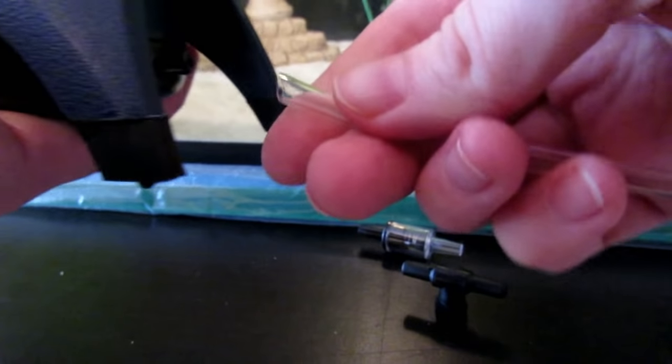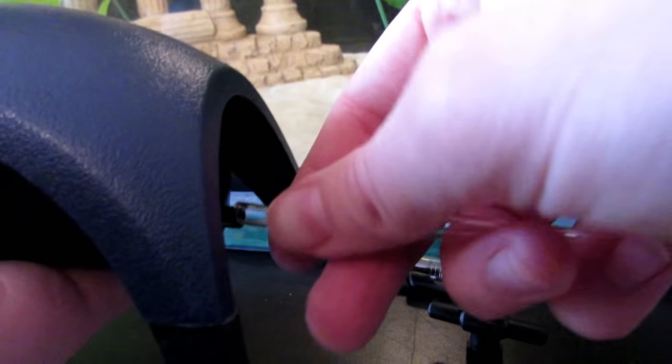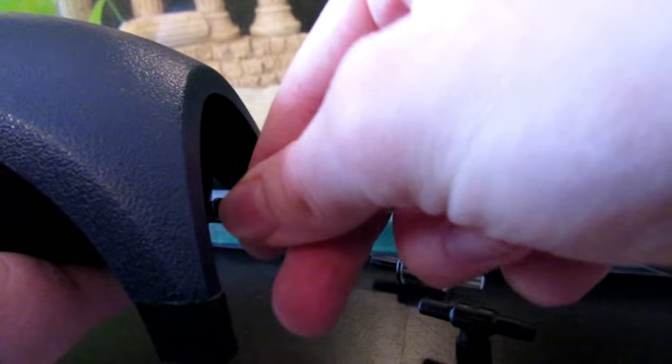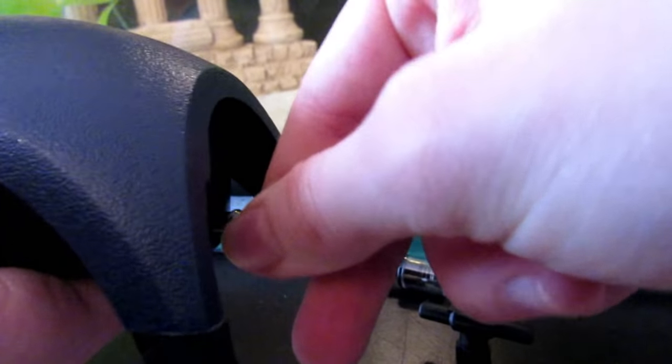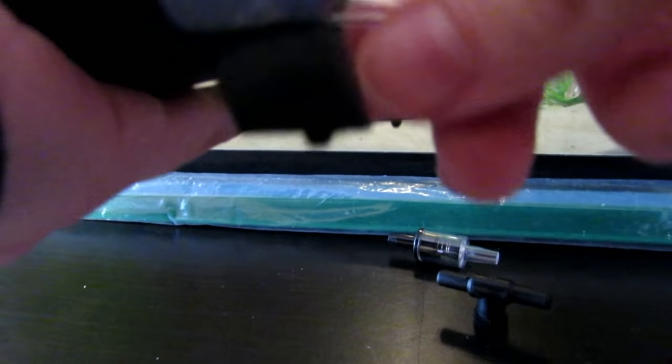Once you're done with that, you're going to take one of the ends of the tubing and connect it to the little part on the air pump that is sticking out. Take your airline tubing and attach that on there as good as you can. It might be hard to get on, but you just wiggle it on by doing an up and down motion with the tubing while pushing onto it.